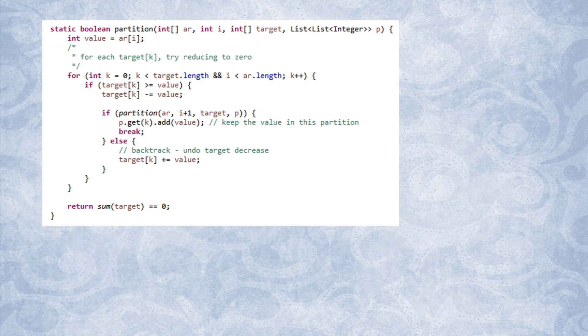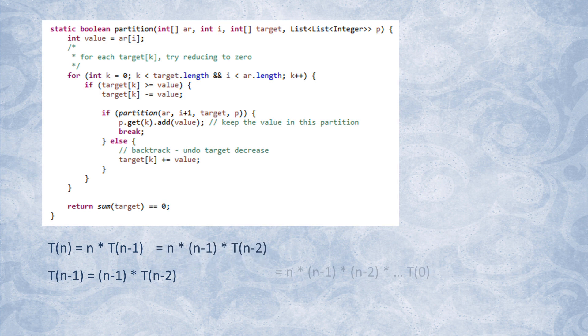But the number of partitions does not have to be some small constant. In fact, it could be as large as n. In that case, the recurrence relation is t equals n multiplied by t, which leads to running time of order n factorial.